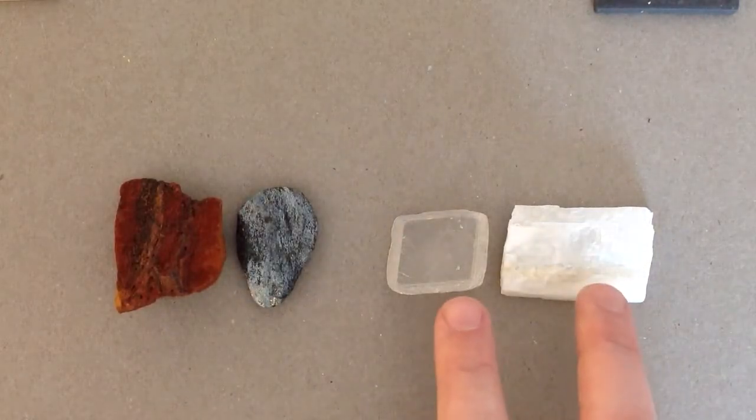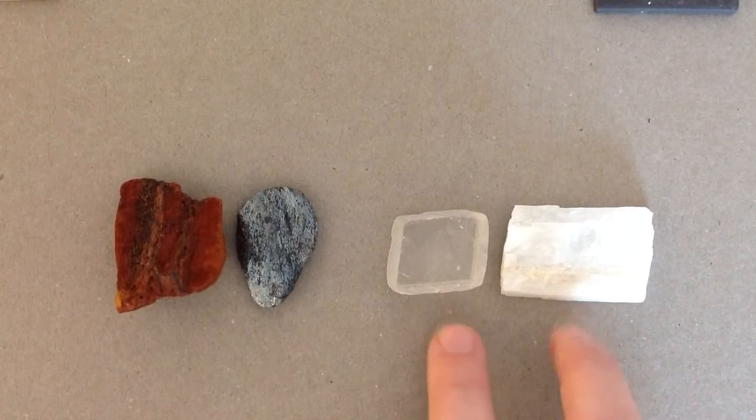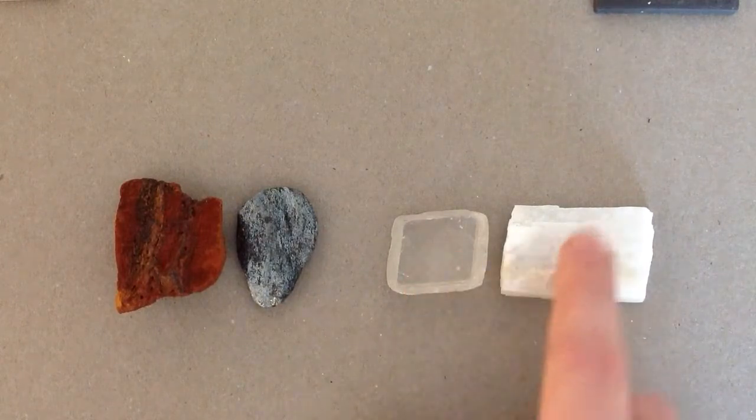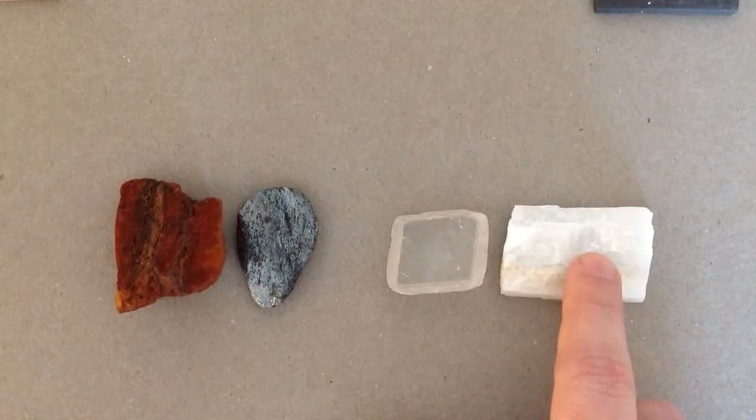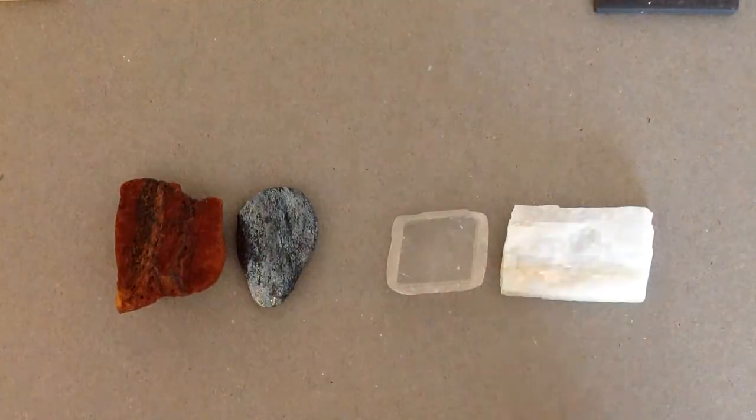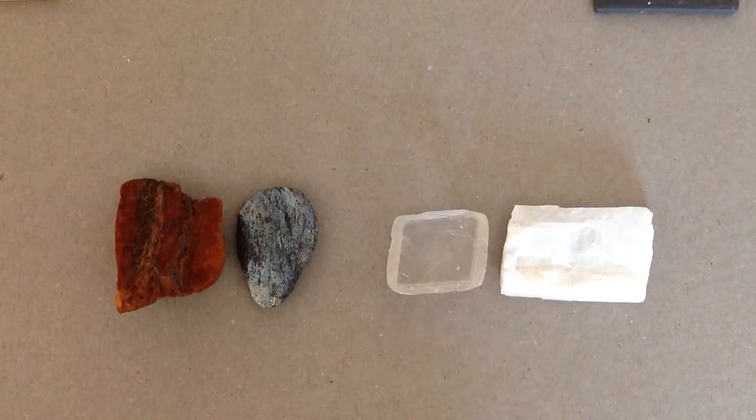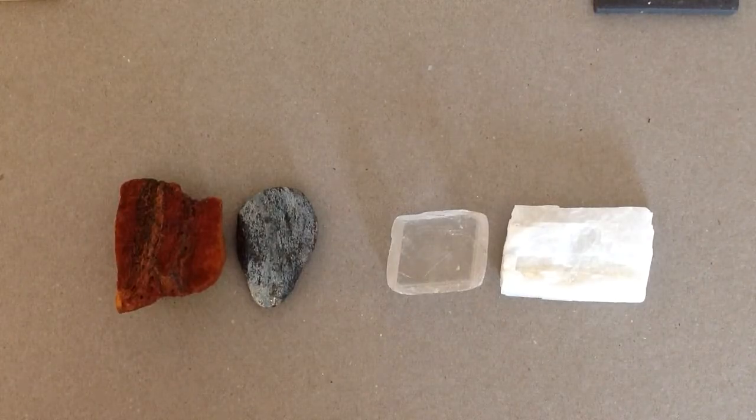The samples on the right are a sample called calcite. Again, very similar shape to them, but very different colors. One is clear, one is white. Again, same mineral, just very different properties in terms of what they look like, how we observe them. They just formed in different environments.